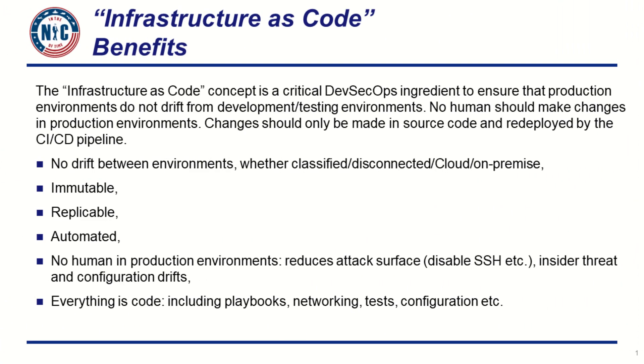Infrastructure as code is a critical key component for DevSecOps. It ensures that your production environments don't drift between your development environment, testing, and staging. More importantly, if you're deployed on multiple clouds — sometimes air-gapped, and on-premises or at the edge — you want to make sure you have no drift. No human should make changes in production at runtime. Instead, changes should be made in the source code and redeployed by your CI/CD pipeline.